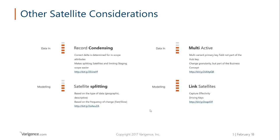Link satellites are worth considering — there are lots of articles debating whether you need them at all. I'm talking about link satellites here purely to capture effectivity on a link, meaning when the relationship was active. You'll need to consider driving keys: if you have a unit of work with five hubs contributing, two of them may form the driving key that determines whether the other attributes have changed.